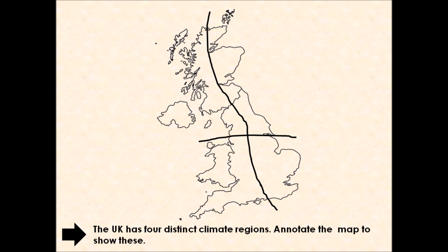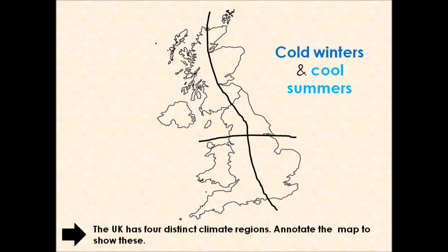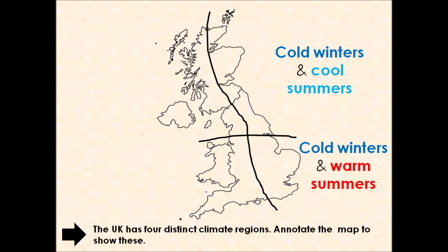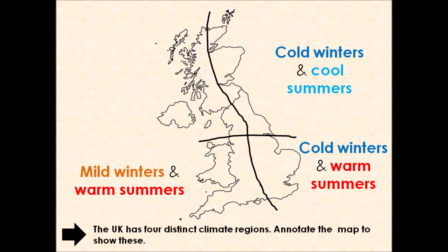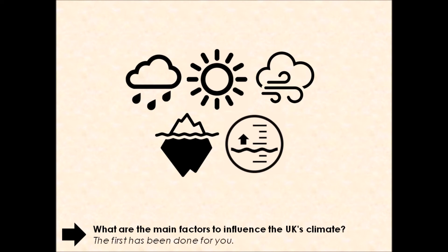The UK has four distinct climate regions. The north east will experience cold winters and cool summers, whereas the south east experiences cold winters but warm summers. The south west experiences mild winters and warm summers, and the north west experiences mild winters and cool summers. These are our four distinct climate regions, and if you're working on the worksheets you'll be drawing these over the UK map provided.